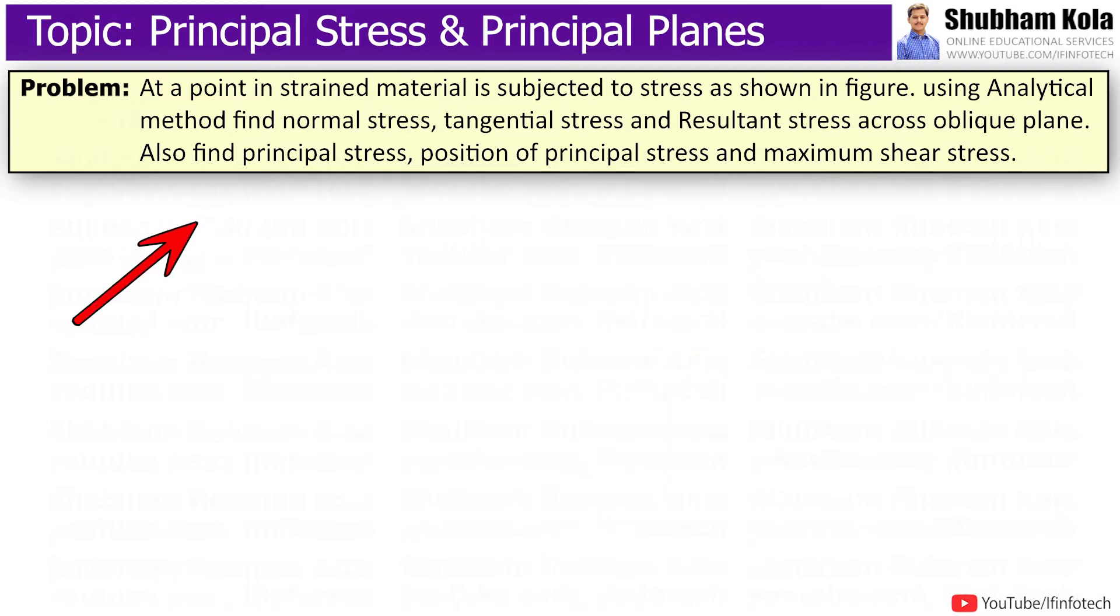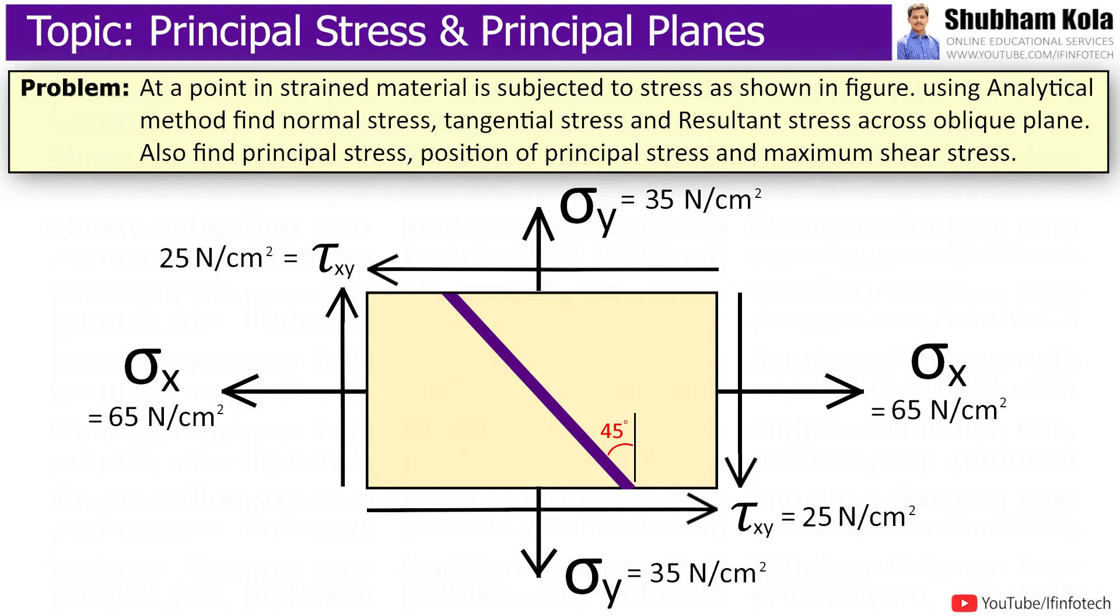Here, the statement is: at a point in a strained material subjected to stress as shown in figure, find normal stress, tangent shear stress, and resultant stress across oblique plane. Also, find principal stress, position of principal planes, and maximum shear stress.